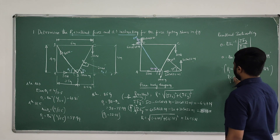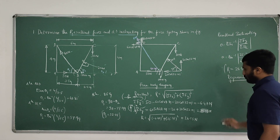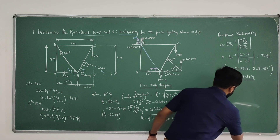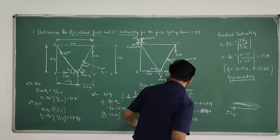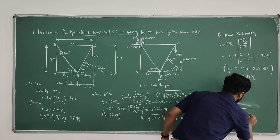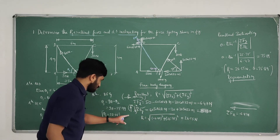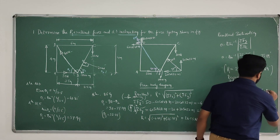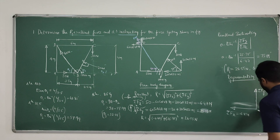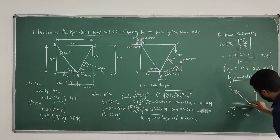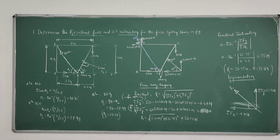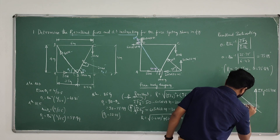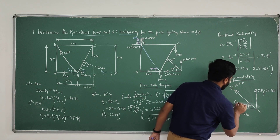For representation: observe sigma Fx is negative, so the resultant inclines to the left side. Sigma Fx equals minus 6.47 Newton. Sigma Fy is positive, so the inclination is upward. Sigma Fy equals 25.75 Newton. The resultant is in the second quadrant. R equals 26.55 Newton and theta equals 75.89 degrees, measured with respect to the x axis.